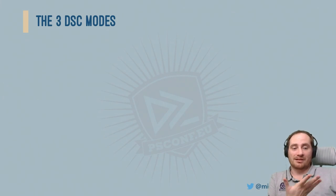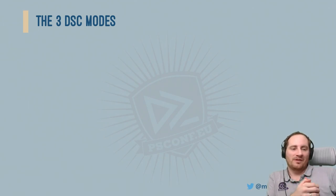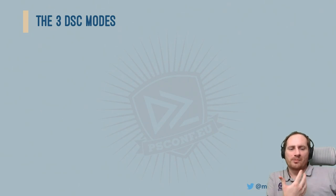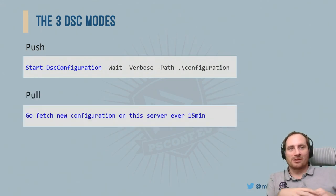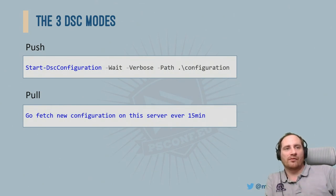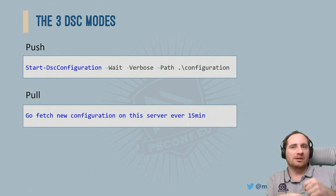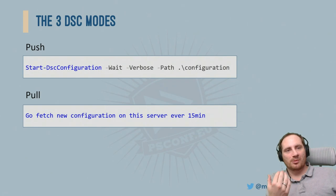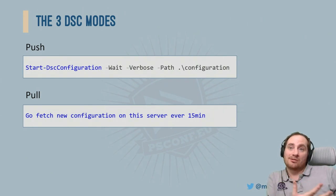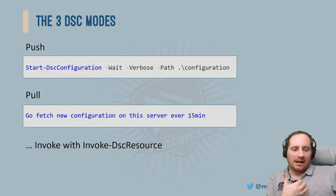How does DSC relate to other tools? There's a myth that DSC exists only in two modes — push and pull — which was true in WMF4 but changed in WMF5. Push is when you tell the agent, 'this is the configuration you're looking for, make it so.' Pull mode is you telling your node to go get the new configuration from a server every 15 minutes — download and apply a new version if there is one, otherwise enforce the one you have. And there's another way: Invoke-DSCResource.